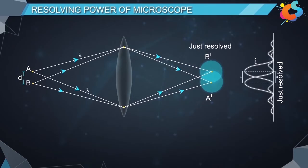then it can be proved that D is equal to 1.22 lambda divided by 2 sin beta.